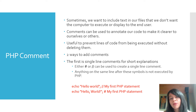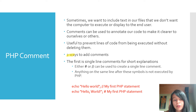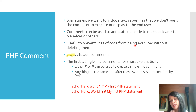Next, let's look at comments. Sometimes we want to include text in our files that we don't want the computer to execute or display to the end user. Comments can be used to annotate our code to make it clear to ourselves or others, or to prevent lines of code from being executed without deleting them. You might use comments to explain why you're doing something a certain way to your future self or to other people working on the document, or to comment out code while debugging to test where an error is.